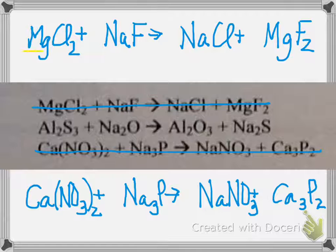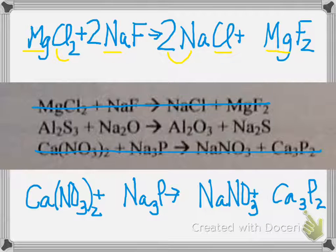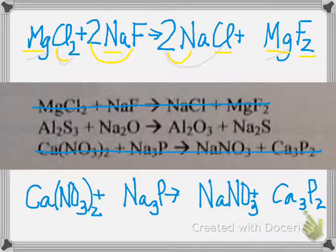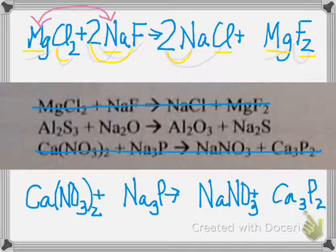For the first reaction, we have one magnesium here and one magnesium here. We have two chlorines and one chlorine, so we need a coefficient of two. We have one sodium and two sodiums, so we need a coefficient of two in front of sodium fluoride. We have two fluorines and two fluorines, so this is balanced. Magnesium and sodium swap partners — sodium's new partner is chlorine, and magnesium's new partner is fluorine.